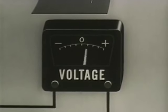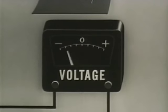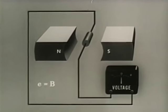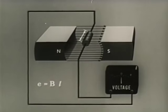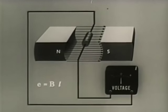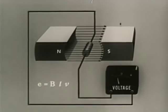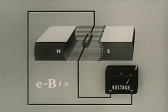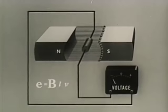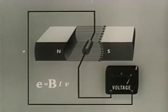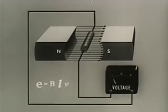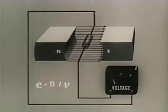We can determine the amount of instantaneous EMF by a simple formula. The instantaneous EMF E equals B, the strength of the field, times L, the length of the conductor cutting lines of force, times V, the velocity of the conductor. An increase in the number of lines of force or the strength of the field increases the instantaneous EMF in the conductor. Increases in the length of the conductor cutting lines also increases the EMF. And finally, the greater the velocity of the conductor, the greater the EMF.